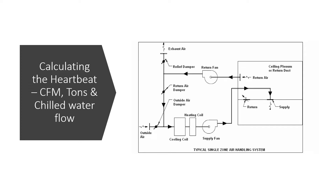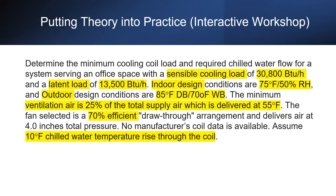Let's get to the heart of the matter: understanding the airflow and cooling needs of our project. We will assume that we already know the cooling load — the amount of heat we need to remove. This can be calculated through manual equations or by using specialized software tools. Consider the following example: determine the minimum cooling coil load and required chilled water flow for a system serving an office space with a sensible cooling load of 30,800 BTU per hour and a latent load of 13,500 BTU per hour.